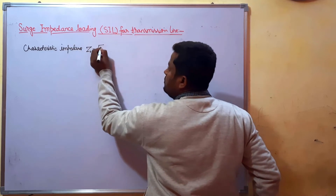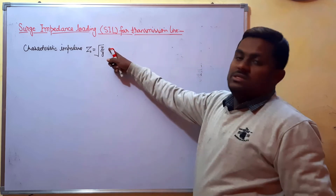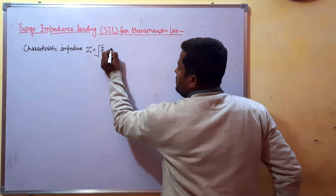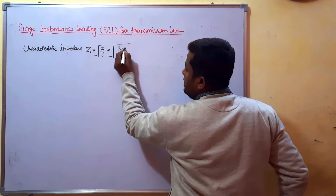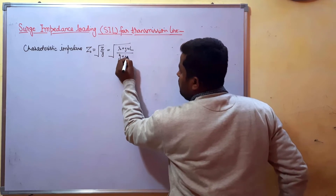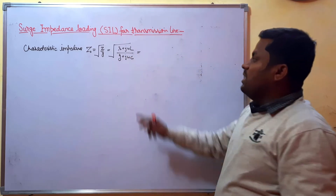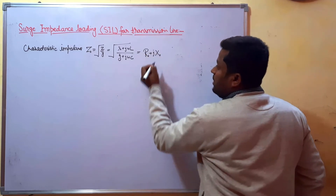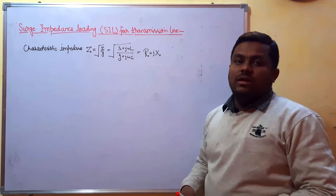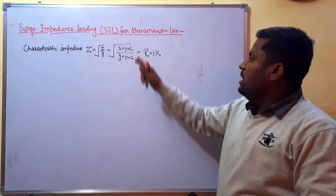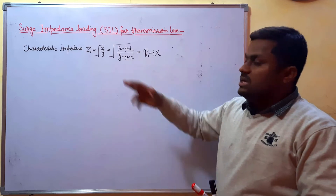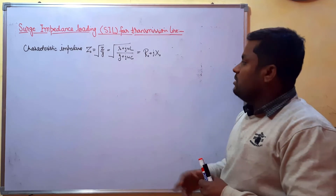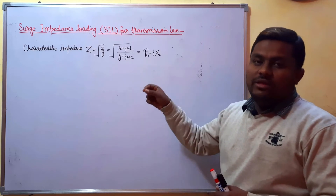The characteristic impedance Z0 is given by Z0 = √(Z/Y), where Z is the series impedance per unit length and Y is the shunt admittance per unit length. This can also be written as √((R + jωL) / (G + jωC)). Here R is the series resistance, L is the series inductance, G is the conductance, and C is the shunt capacitance of the line, all per unit length.